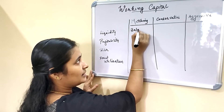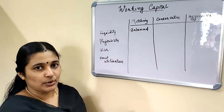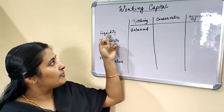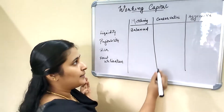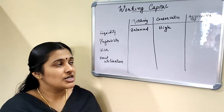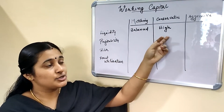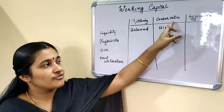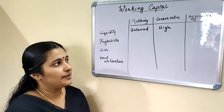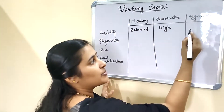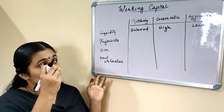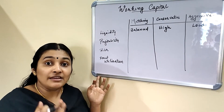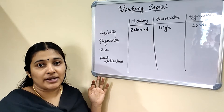Liquidity is balanced in the case of the matching approach. But in the case of the conservative approach, liquidity is high because short-term financing is used only to meet contingencies. In the case of the aggressive approach, liquidity is low because short-term sources of funds are even used for permanent assets.